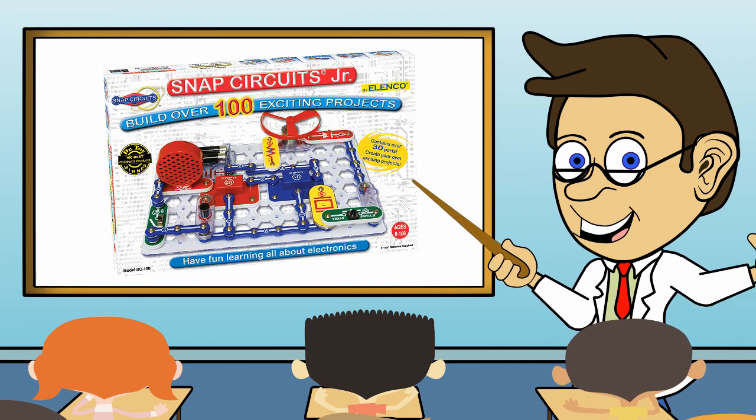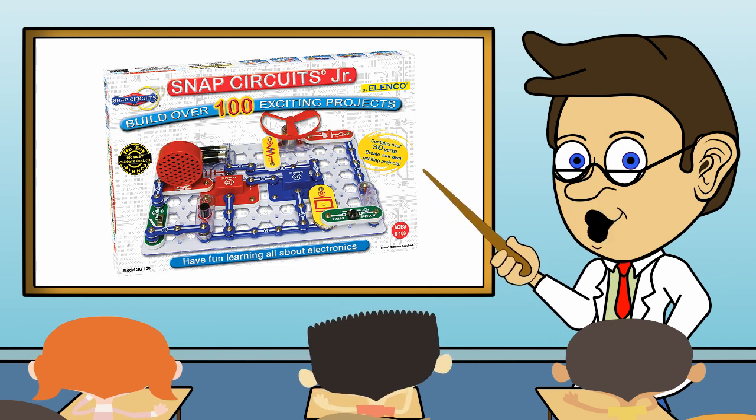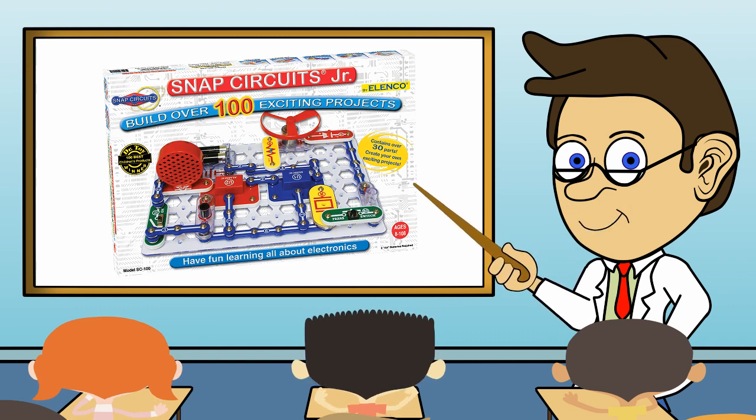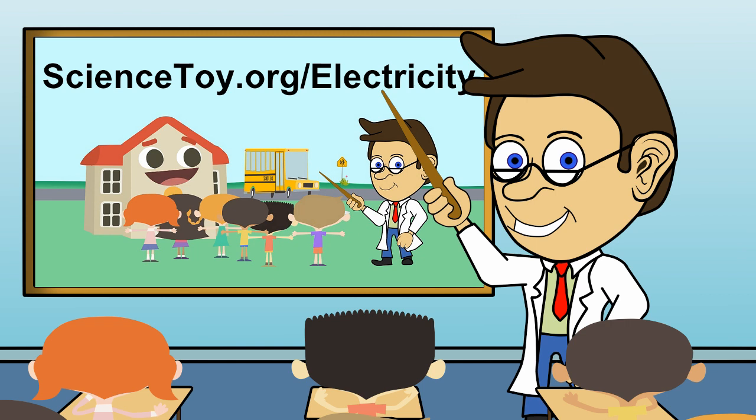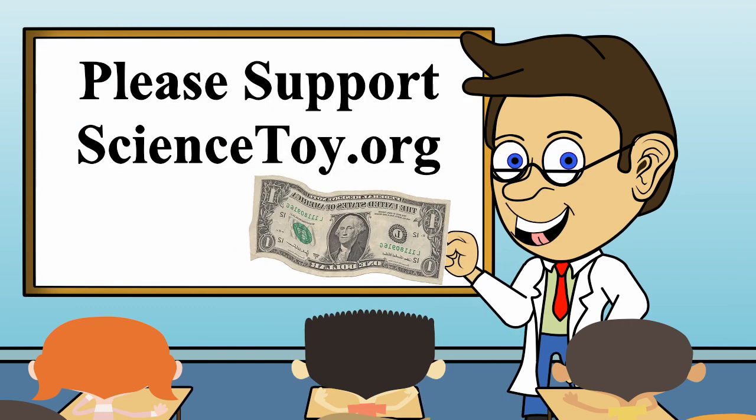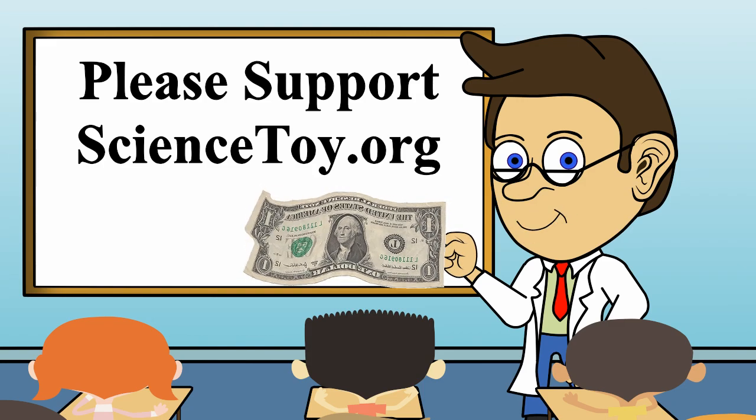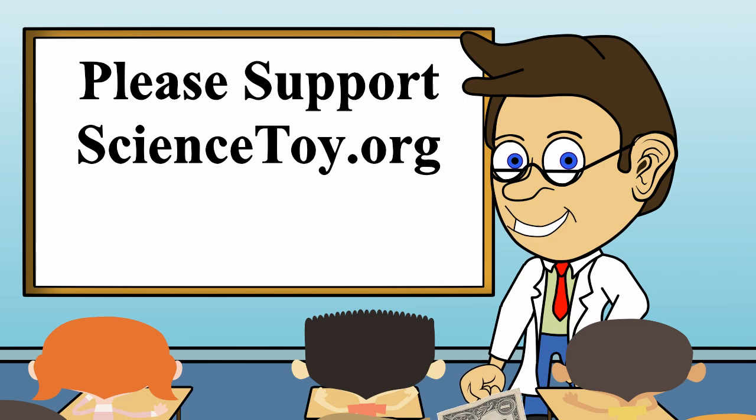We will be using the Snap Circuits Junior Electronics Discovery Kit to build this circuit. You can click here to go to sciencetoy.org/electricity to find links where the toys and other items we are using can be purchased. If you make a purchase using any of these links, sciencetoy.org will earn a commission on the sale. So thank you for supporting our cartoons.